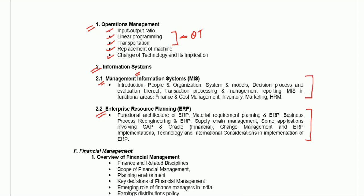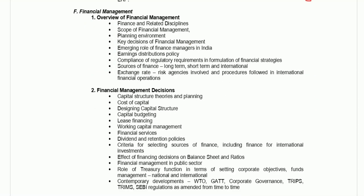The next topic is financial management. The first one is overview of financial management — here they are asking about finance and related disciplines, scope of financial management, planning environment, key decisions of financial management, emerging roles, earning distribution policy, compliance of regulatory requirements, sources of finance, exchange rate, risk agencies involved, etc. Scope of financial management, earning distribution policy, sources of finance, and risk agencies are the important ones here.